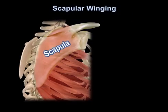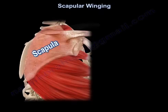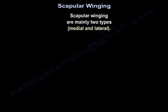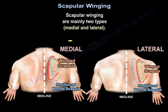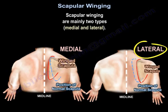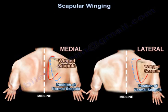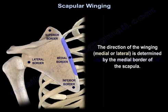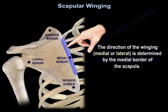Scapular winging. Scapular winging are mainly two types: medial scapular winging and lateral scapular winging. The direction of the winging, medial or lateral, is determined by the medial border of the scapula.